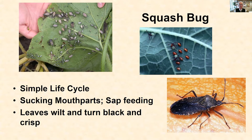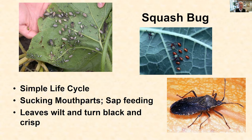Squash bug is a true bug in the order Hemiptera, and that means it has a simple life cycle and sucking mouth parts. The simple life cycle starts when eggs are laid on the undersides of squash and pumpkin leaves by the adult. Those brick red masses of eggs then hatch into dozens of little tiny nymphs. The immature stage is a nymph, and all stages — the nymphs and the adults — puncture the leaf and begin to feed on plant sap. That weakens the plant and eventually may cause that entire leaf to wilt, collapse, and turn black and fail to function.